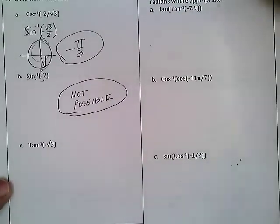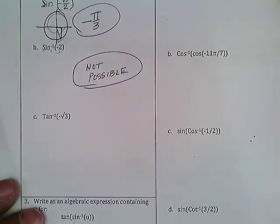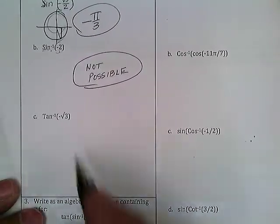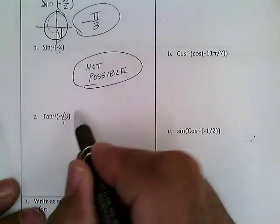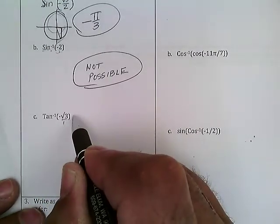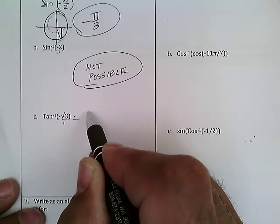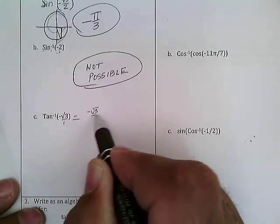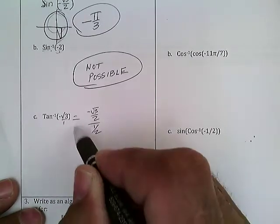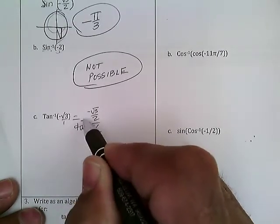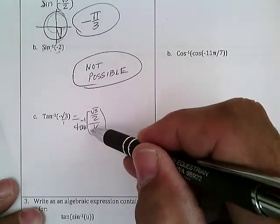Number 3: when is the tangent negative square root of 3? That would be -√3 over 1, which we remember comes from -√3/2 over 1/2.